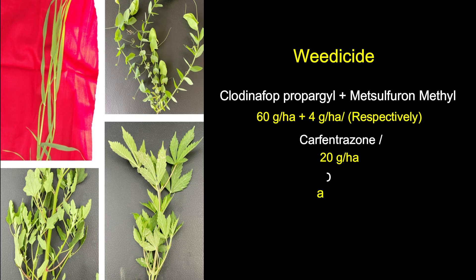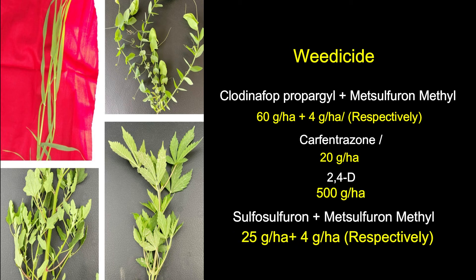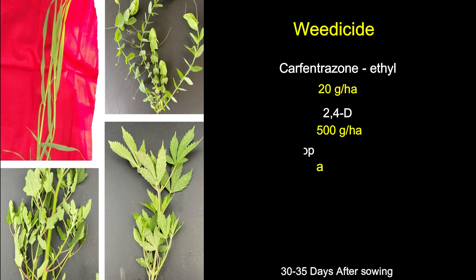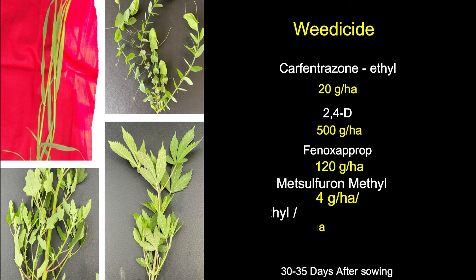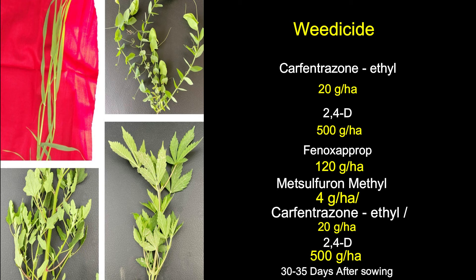For mixed grassy and broadleaf weeds, recommended combinations are: clodinafop-propargyl + metsulfuron-methyl (60 g/ha + 4 g/ha), carfentrazone-ethyl 20 g/ha + 2,4-D 500 g/ha; sulfosulfuron + metsulfuron-methyl (25 g/ha + 4 g/ha), carfentrazone-ethyl 20 g/ha + 2,4-D 500 g/ha; phenoxaprop 120 g/ha + metsulfuron-methyl 4 g/ha + carfentrazone-ethyl 20 g/ha + 2,4-D 500 g/ha. Apply 30 to 35 days after sowing.